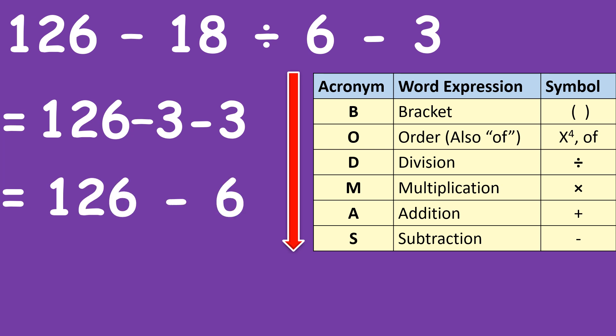Now eventually we have 126 minus 6. Why is it minus 6? You have a minus 3 and you have another minus 3. You owe 3 and you owe another 3 so that means you're owing 6. So now we'll be able to carry out the subtraction. So 126 minus 6 and that gives us 120.